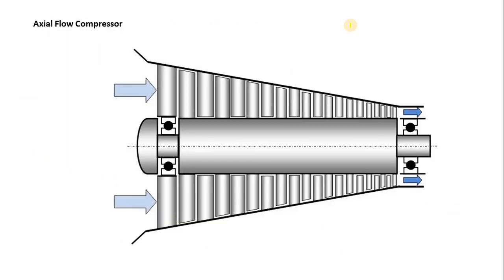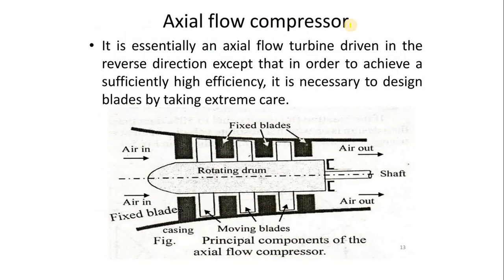Now we will discuss how the axial flow compressor works. The most important thing of the axial flow compressor is that the electrical motor shaft is connected with a rotating drum. That rotating drum is the first part of the axial flow compressor. The second important part is the rotor blades — the rotating drum is attached with a number of blades, which are the rotor blades fixed to the rotating drum, and they are continuously rotated along with the rotational motion of the drum.